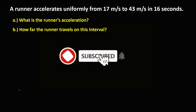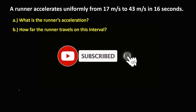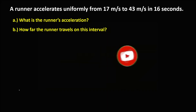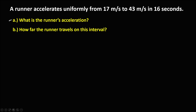Let's have this problem. A runner accelerates uniformly from 17 meters per second to 43 meters per second in 16 seconds. What is the runner's acceleration, and how far does the runner travel in this interval?